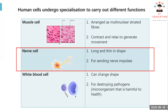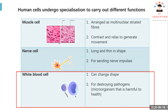This is a nerve cell. Nerve cells can be found throughout the body, but most are found in our brain. They are long and thin in shape and are important for sending nerve impulses.